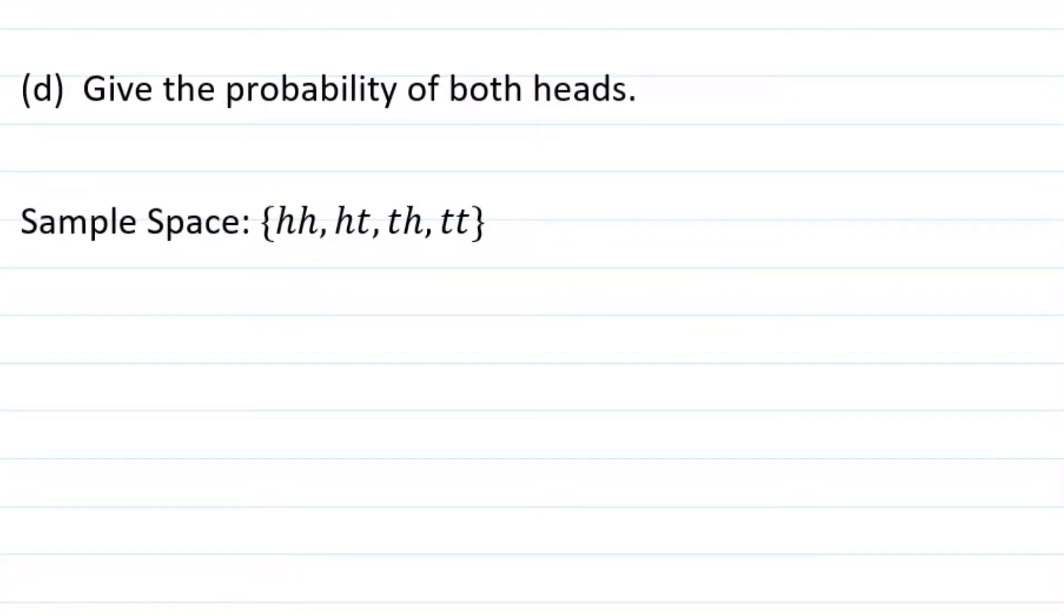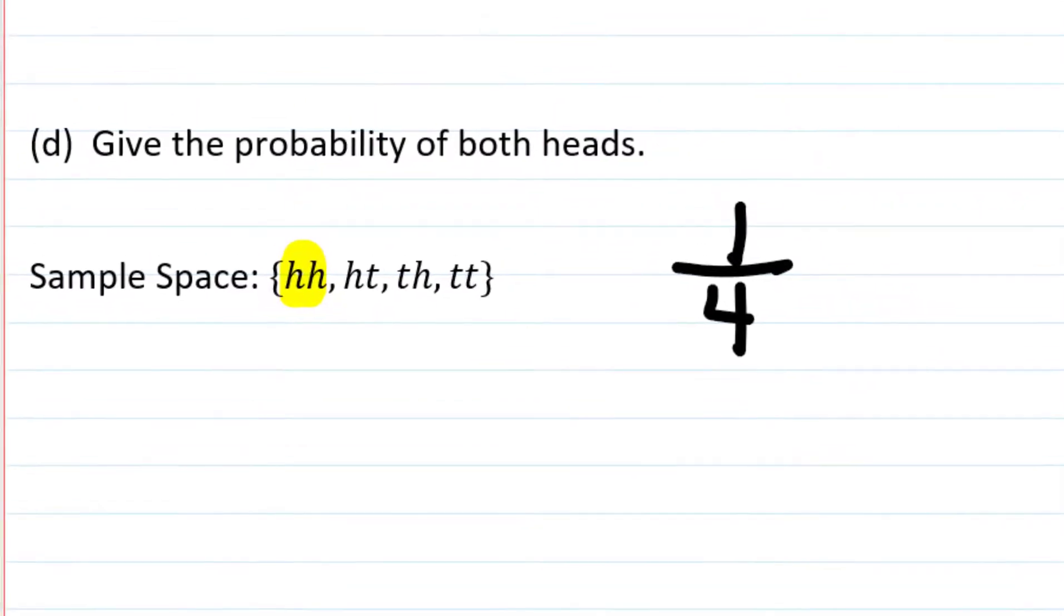Let's try another one. Part D, give the probability of both being heads. So that means both the quarter and the dime are heads, which means both of the letters have to be H's. So the only favorable outcome in our sample space for that is HH. There's only one favorable outcome, still four possibilities. So our probability of getting both of our coins to have heads on them is only one-fourth.